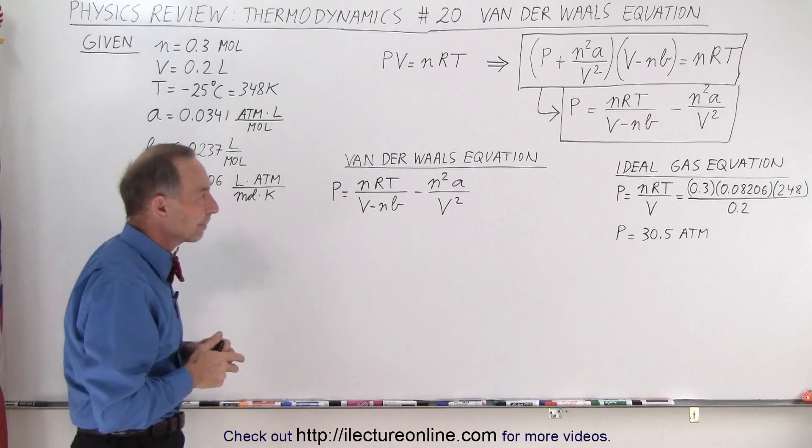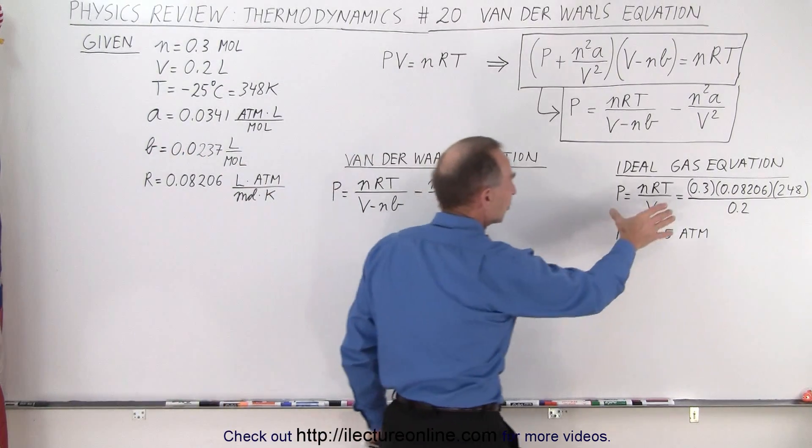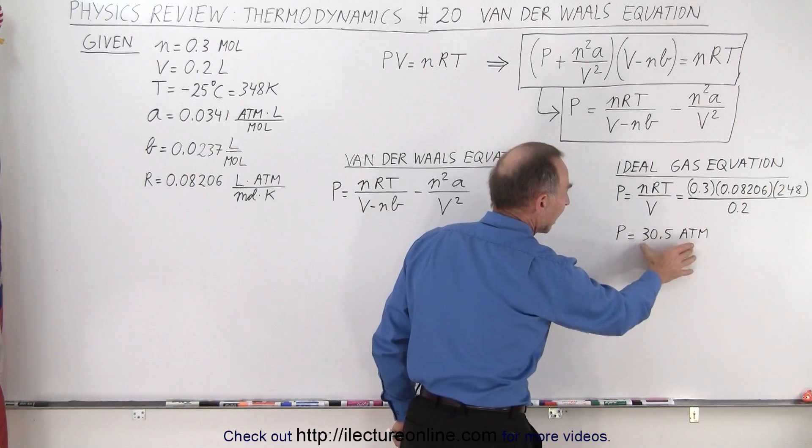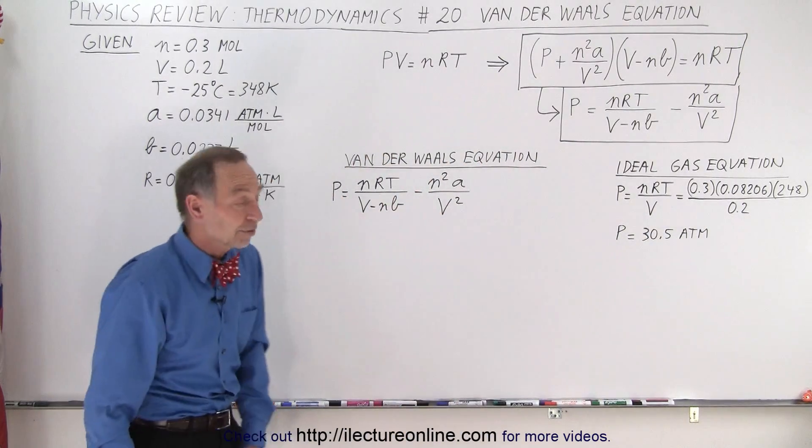What is the pressure then? And so if we use the ideal gas equation, the pressure is simply nRT over V, and it turns out to be 30.5 atmospheres.